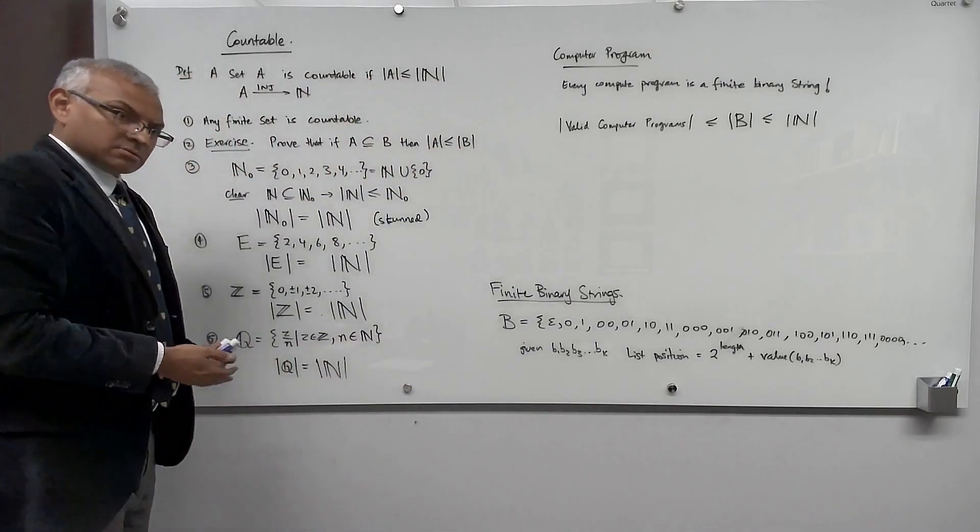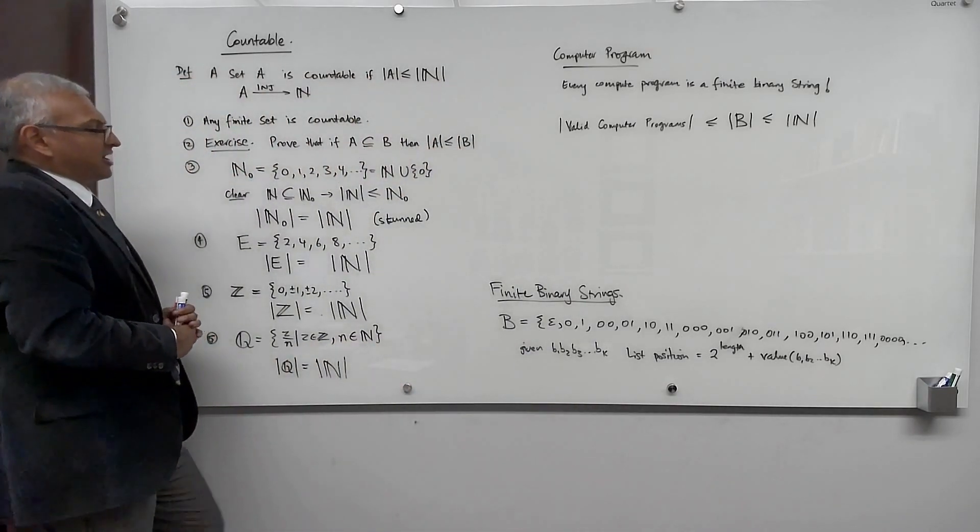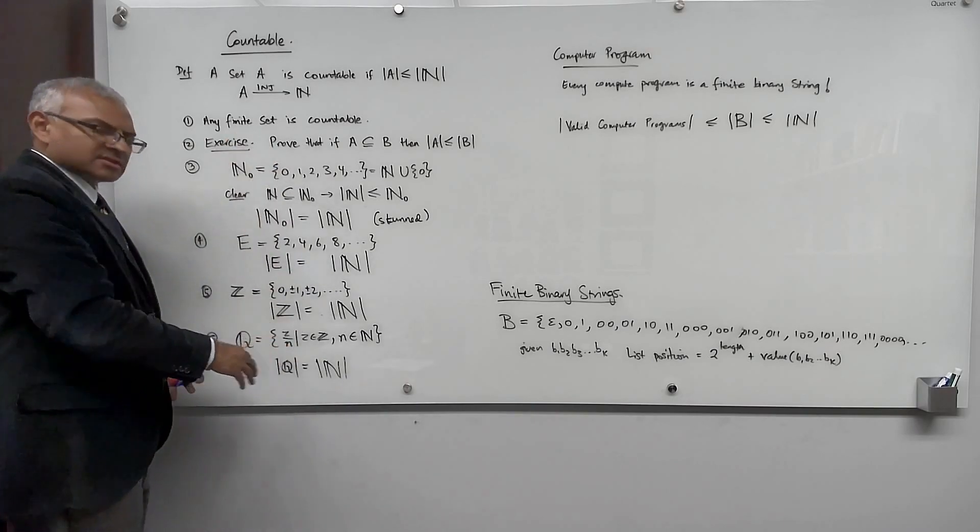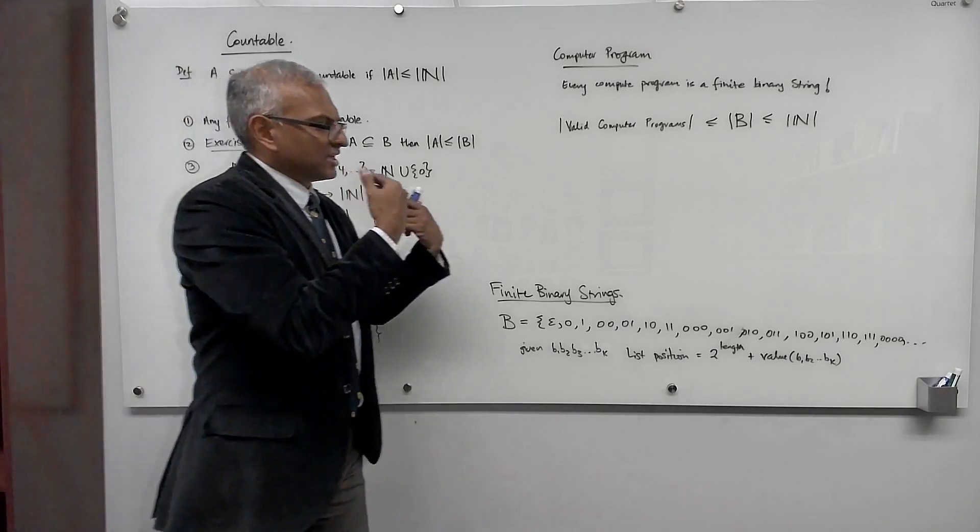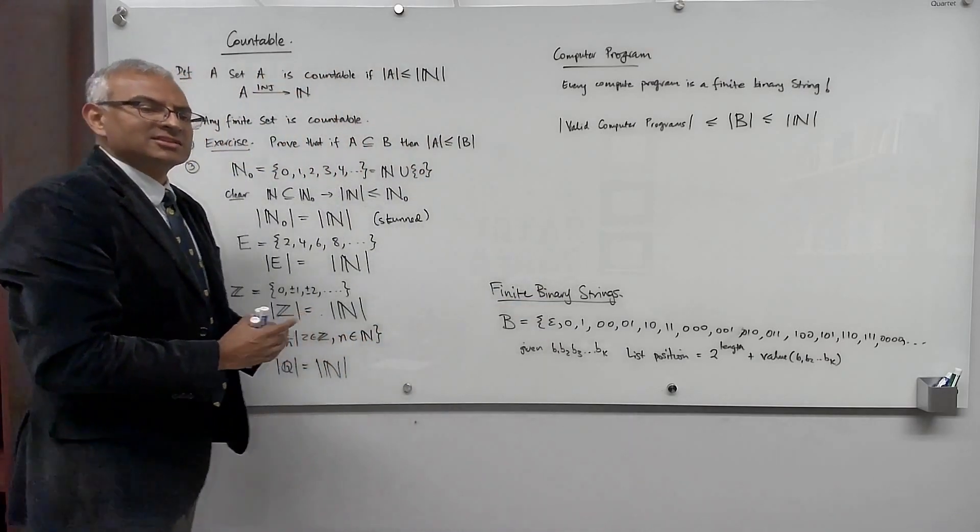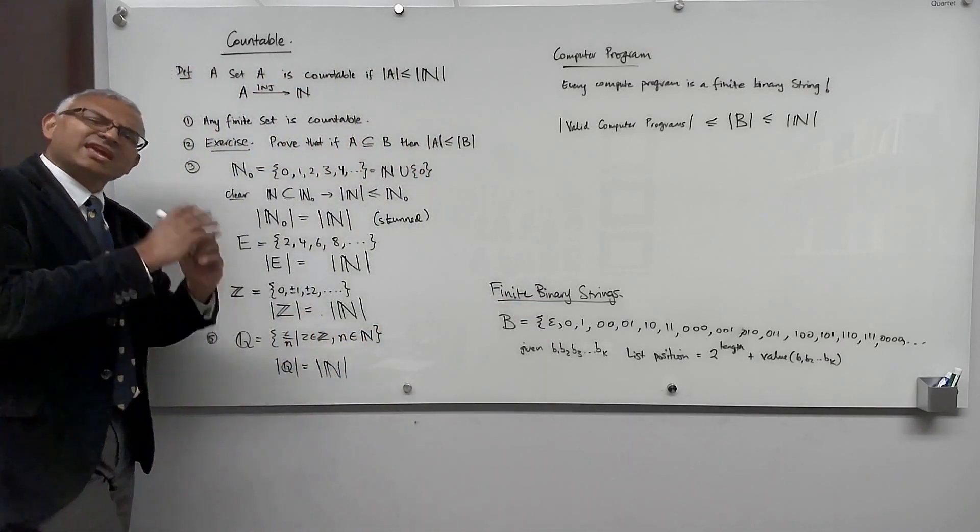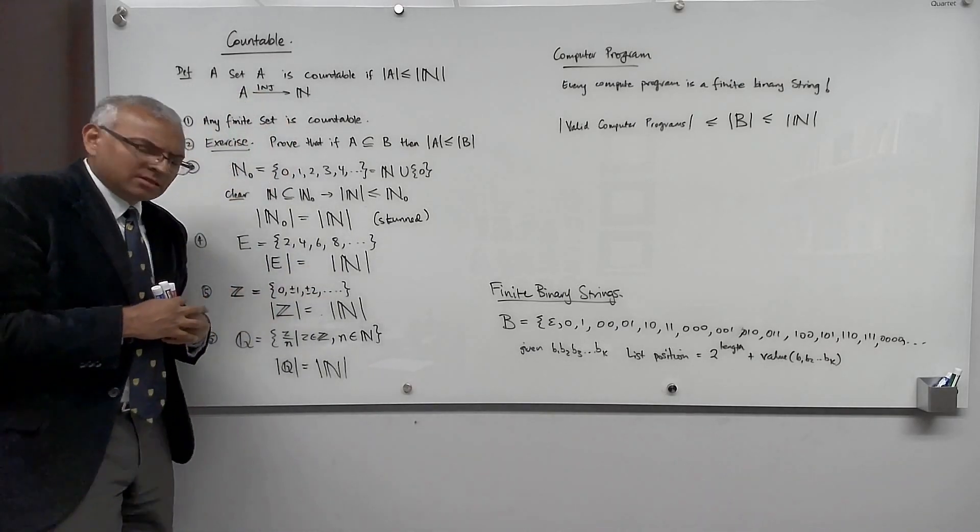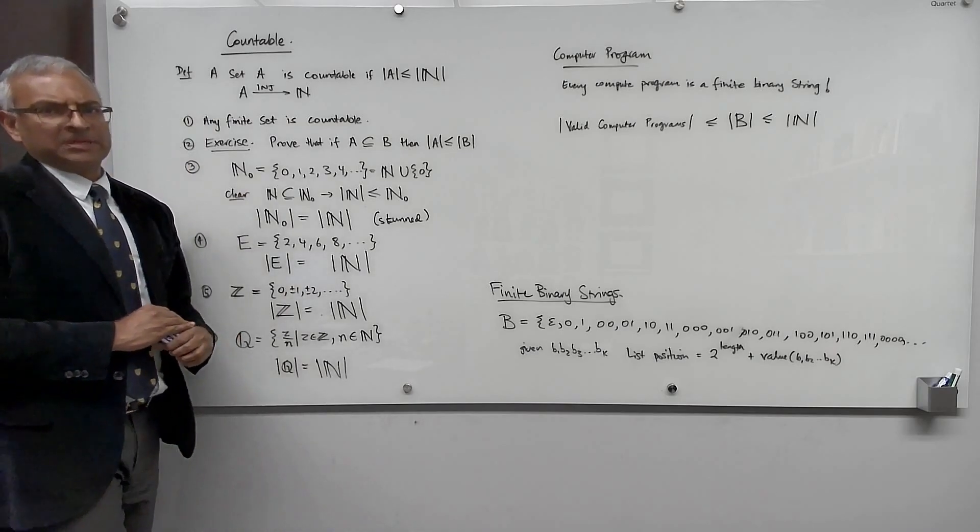So Cantor is looking at the state of affairs and it looks like everything has the same cardinality of the natural numbers. He's really trying to find something. He's really trying to find out whether there's any set, any set whatsoever, which has a cardinality which is larger than the natural numbers.